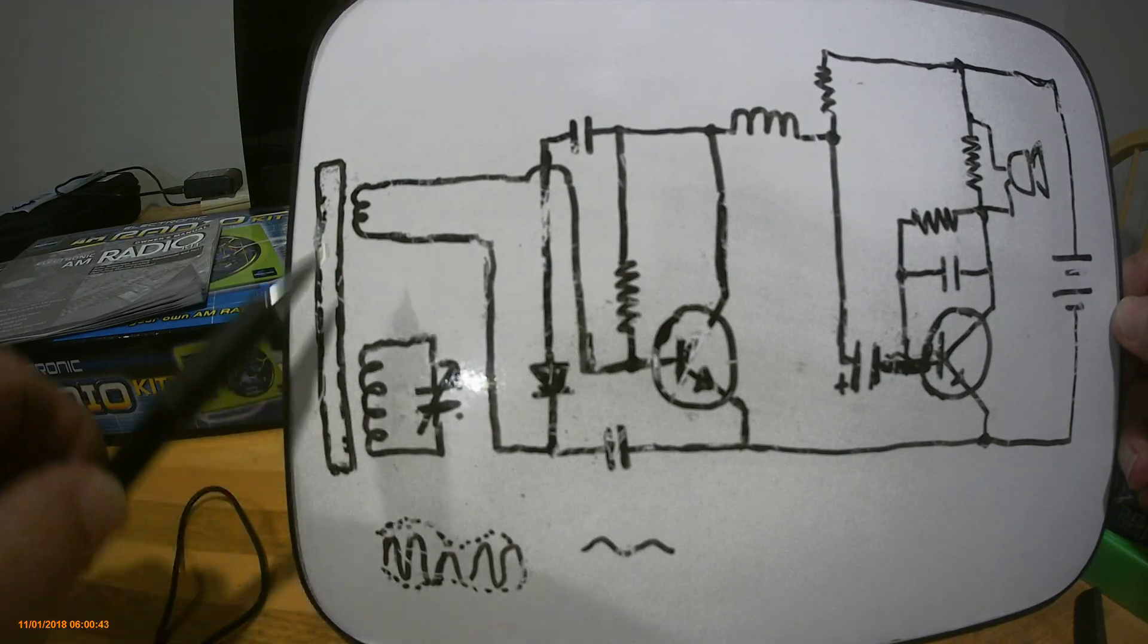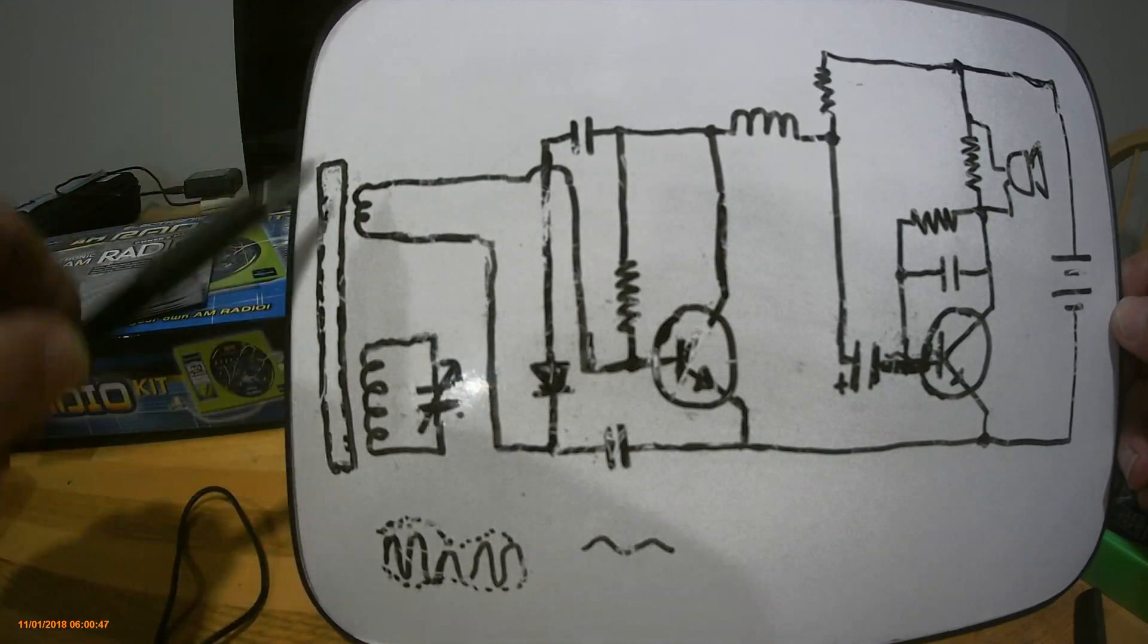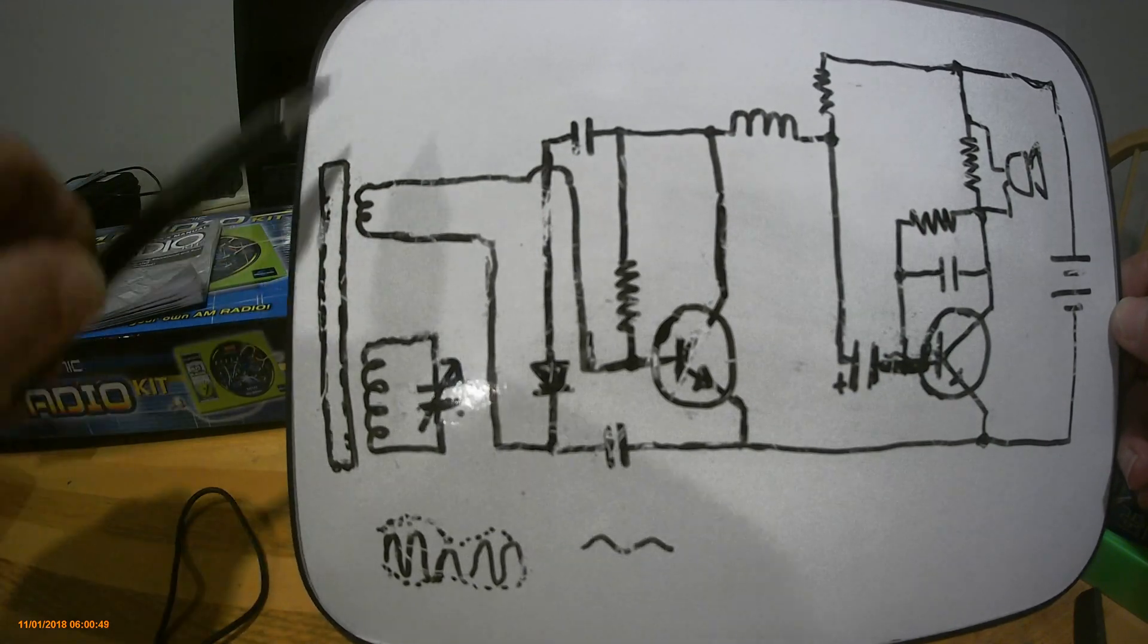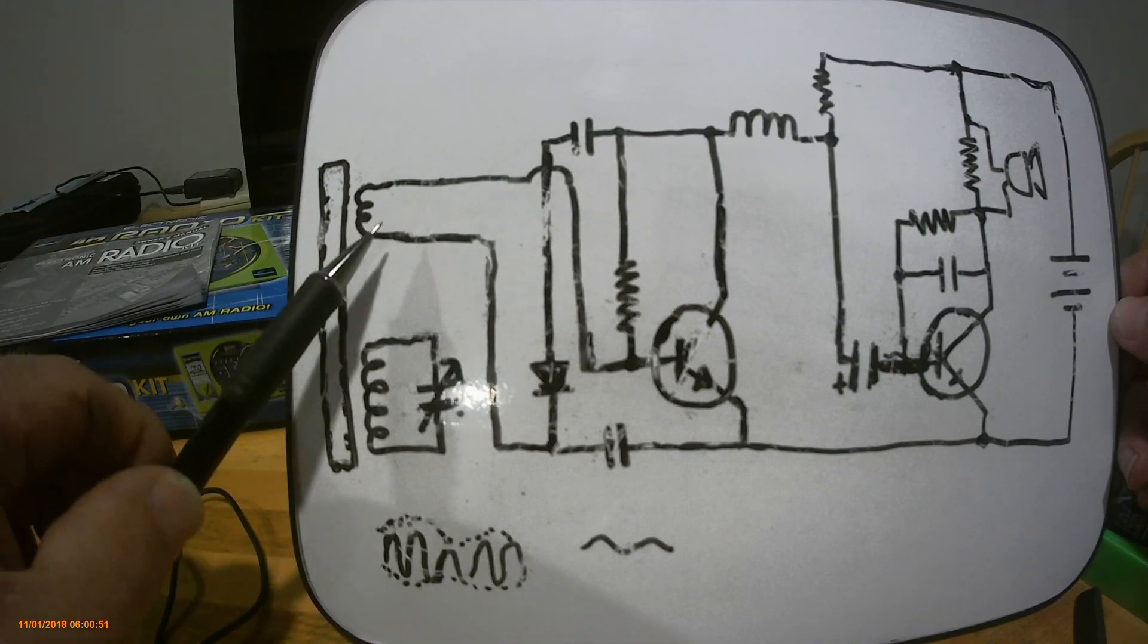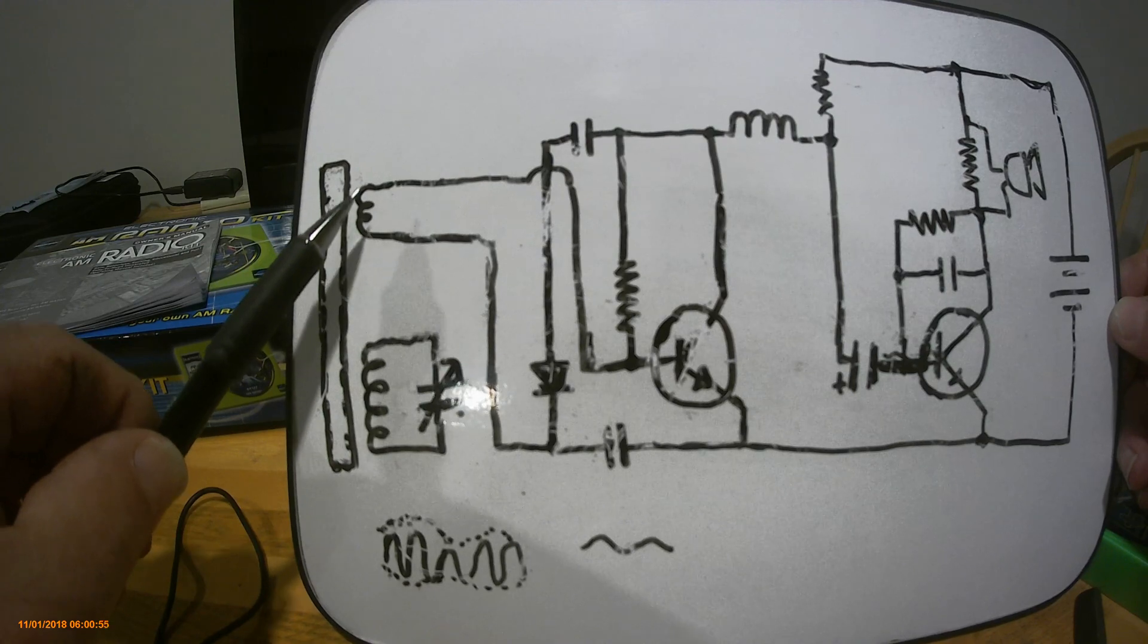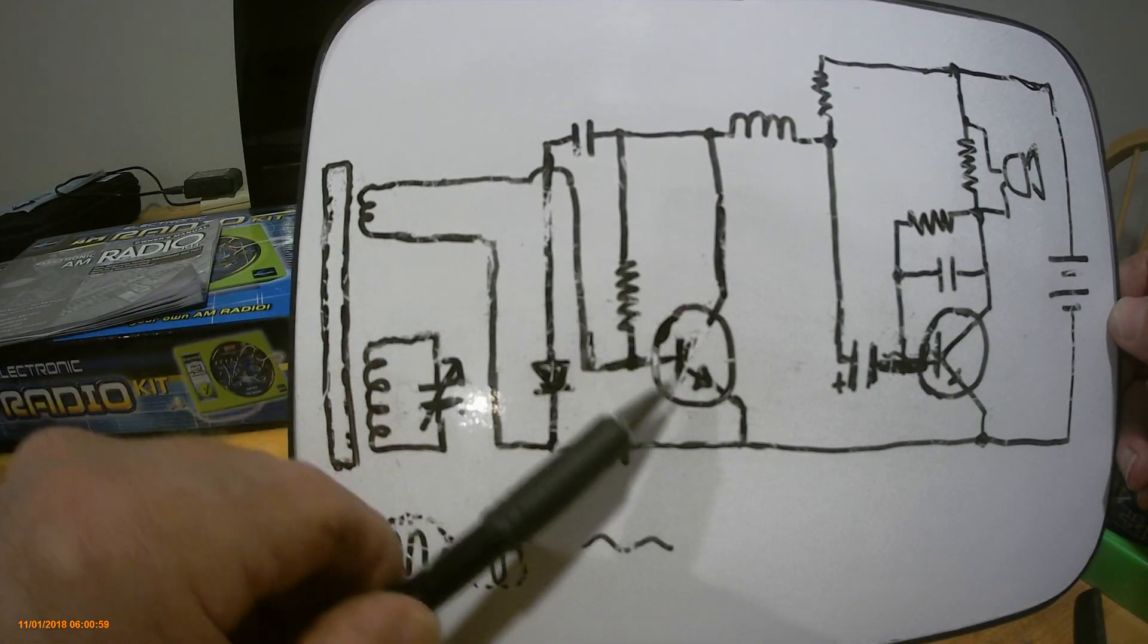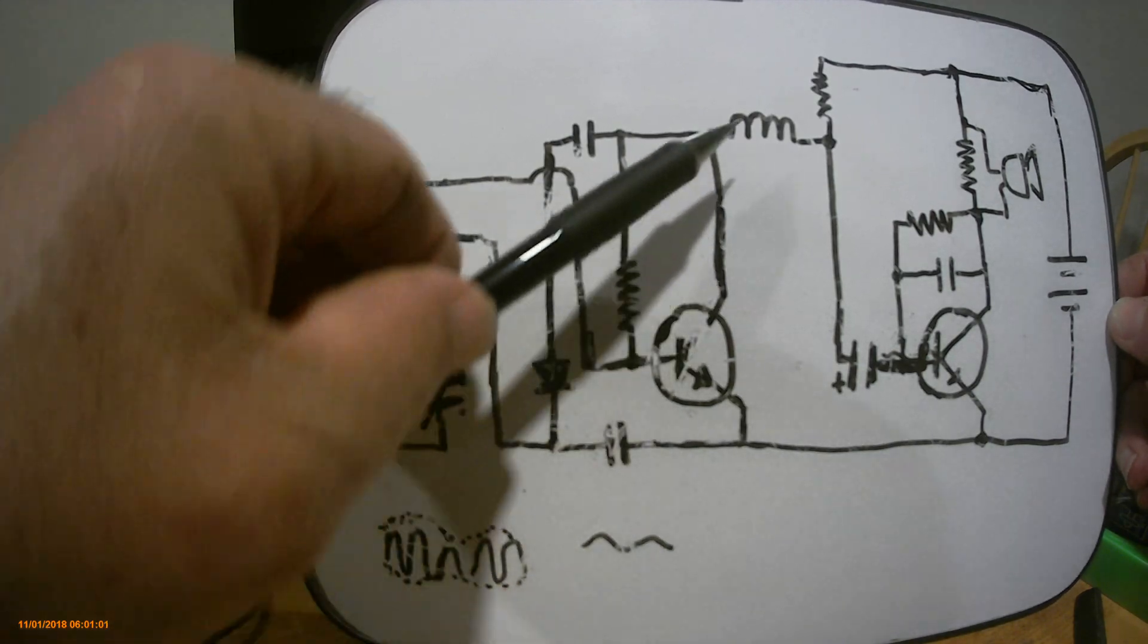While that's happening, another coil is wrapped around the other part of the bar and picks up that signal and feeds it into this transistor, which amplifies the signal and sends it around.